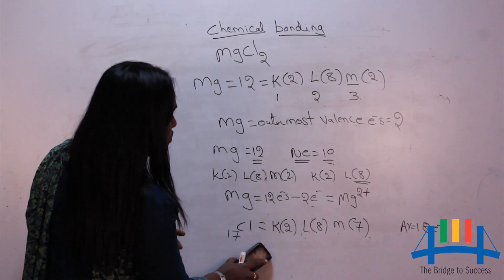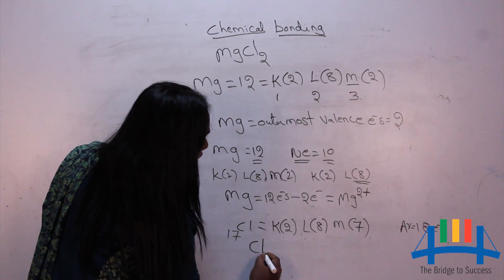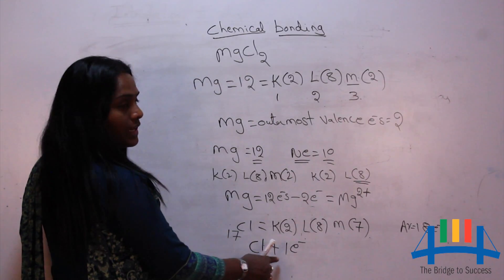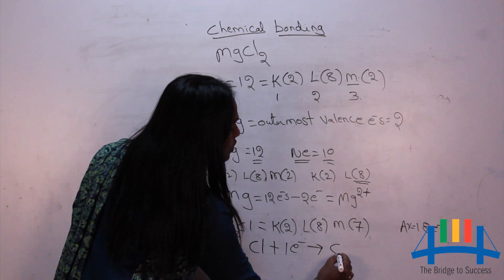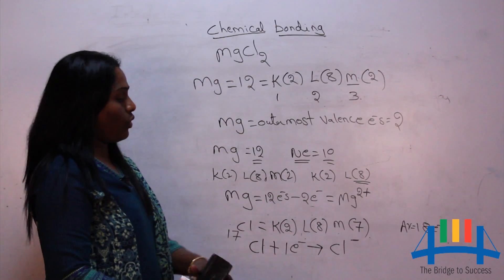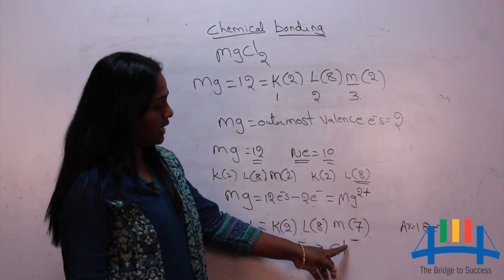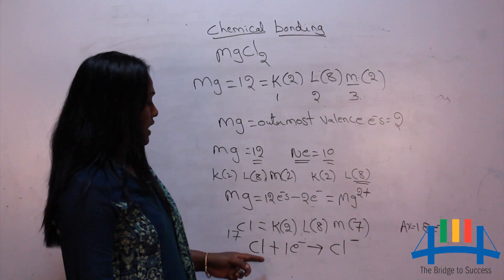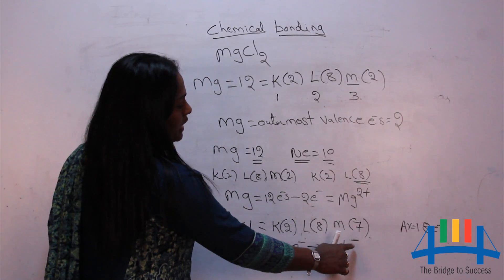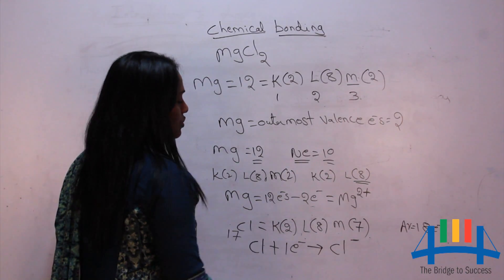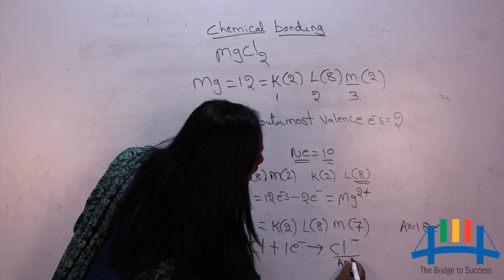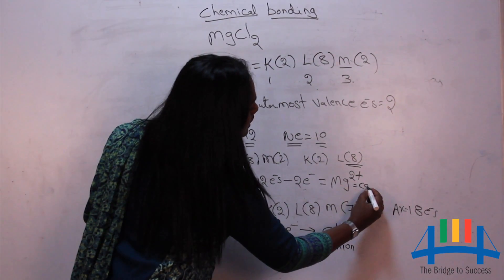Chlorine gains one electron, giving it a negative sign — written as Cl⁻. Gaining electrons indicates a negative sign. Since it gained only one electron, we write one negative. Chlorine is now called an anion, while magnesium is called a cation.